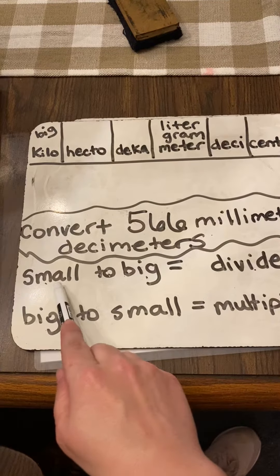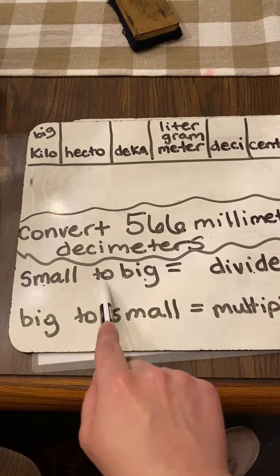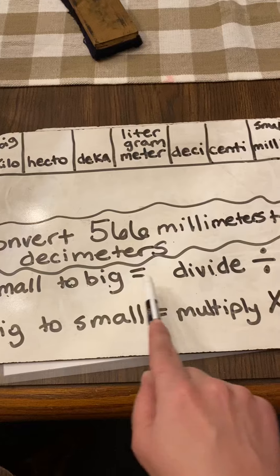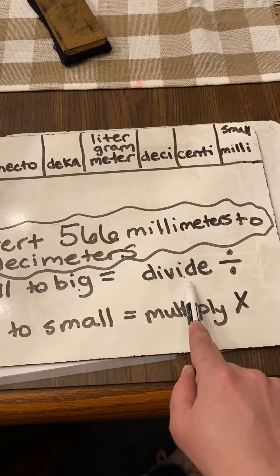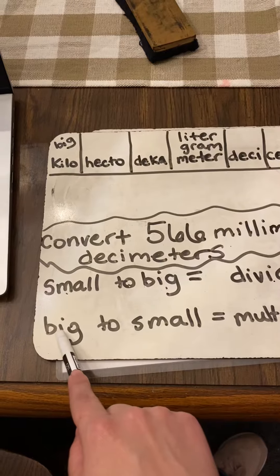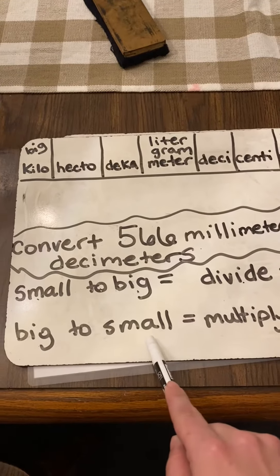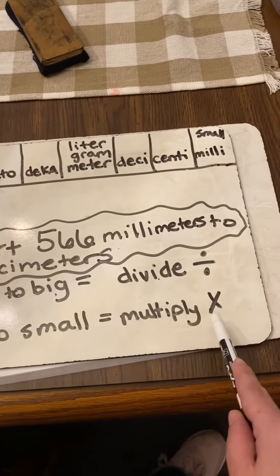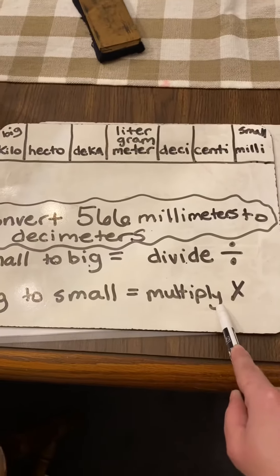The rule that we want to get in our head is, when we are moving from a small unit of measurement to the big one, we will divide. When we move from a big unit of measurement to a smaller unit of measurement, we are multiplying by powers of 10.